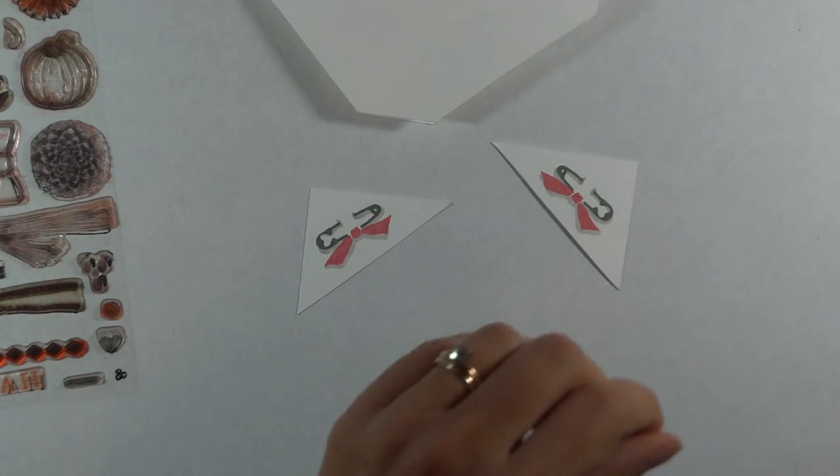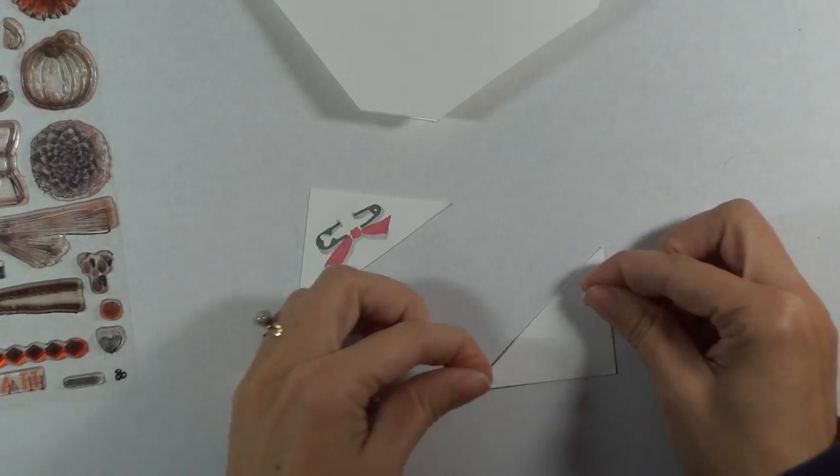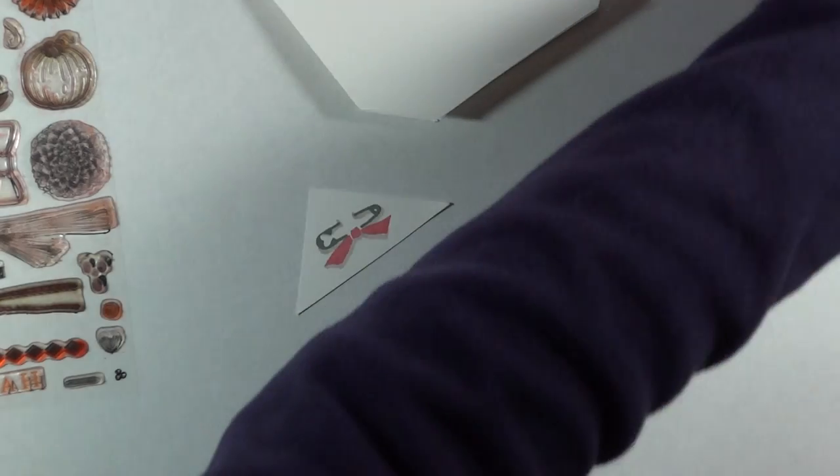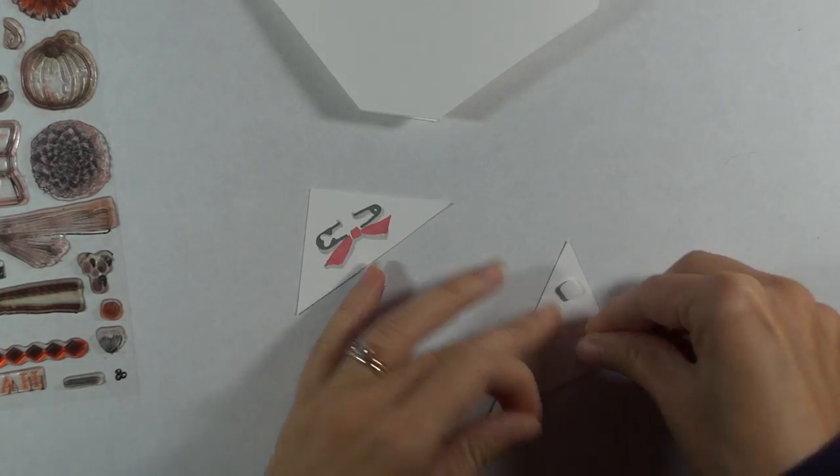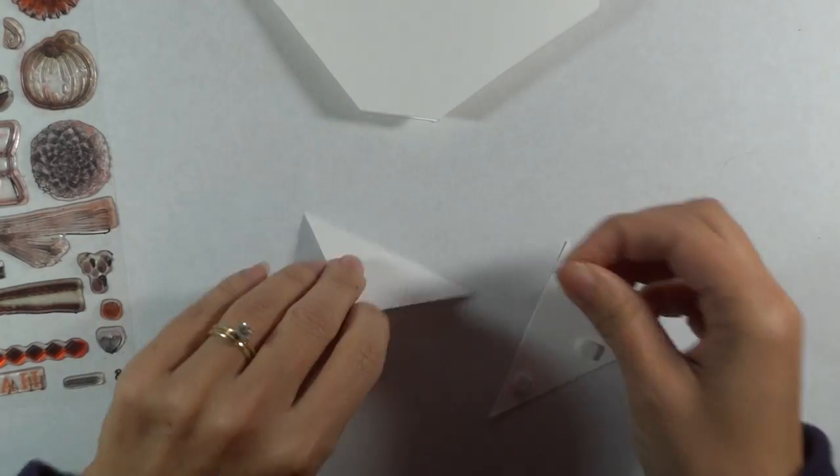And I'm going to pop these up. And if you want this to be flat, you can just use regular adhesive, but I just like to add a little bit of dimension. It's just more interesting looking. So one in each corner.